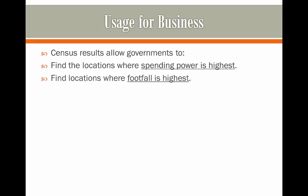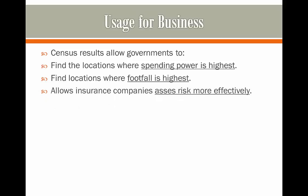The census also finds locations where footfall is higher, so it may be that one part of a town has more footfall than another area, and businesses may decide to locate there. It also allows insurance companies to assess risk more effectively — if in one place more people may be dying because of certain factors, insurance companies are able to change the insurance rates to cater to whatever is happening.